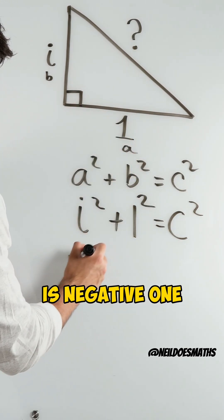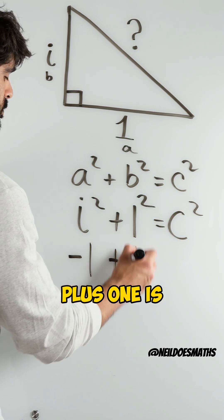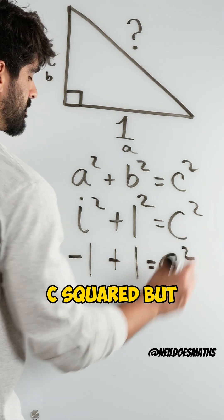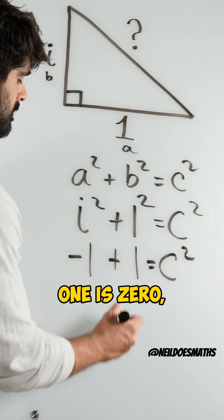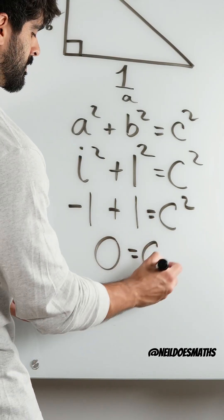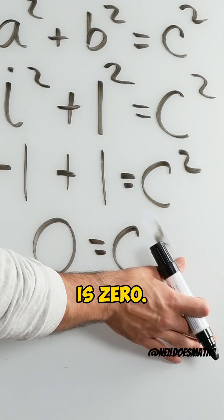Now we just said i squared is negative one, plus one is c squared, but minus one plus one is zero, which actually means then that c is zero.